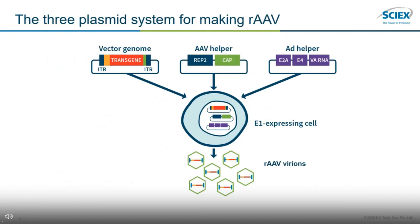This slide shows the 3-plasmid system for making recombinant AAV, also known as the triple transfection system. The recombinant AAV genome does not contain the cap and rep gene — it is replication deficient. In order to make more virons, or viral particles, we need three plasmids. The first plasmid contains the entire recombinant AAV genome, including the transgene. The second helper plasmid provides the rep gene and the capsid. The third plasmid provides the AAV-derived genes essential for the replication of the virus. After the packaging host cell is transfected with these plasmids, the host cell can make recombinant AAV virons.